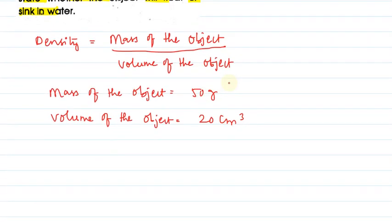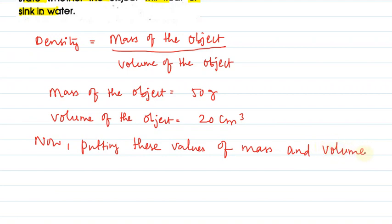Now let us substitute the values. Agar values hum put karenge. Now putting these values of mass and volume of the object in the above formula. We get kya hai?